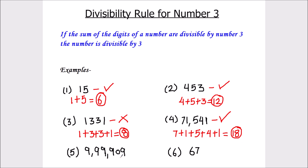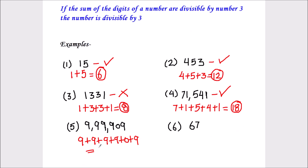Next, we have 9,99,909. Let's add the digits: 9 plus 9 plus 9 plus 9 plus 9 plus 0 plus 9, and that equals 45. And 45 is fully divisible by number 3. So the number 9,99,909 is fully divisible by number 3.